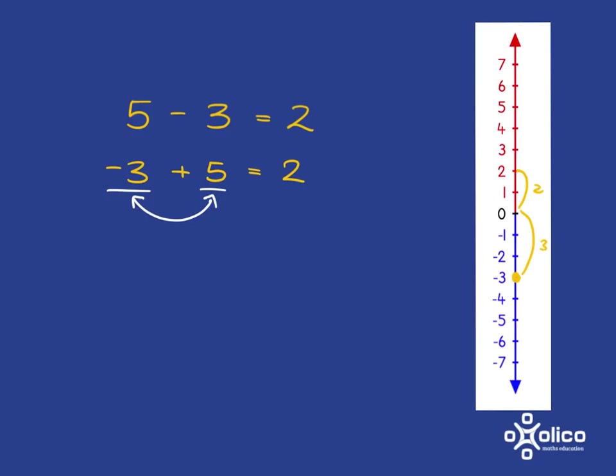So we can swap these things around and we're going to get exactly the same thing. So negative 3 plus 5 is exactly the same as 5 plus negative 3. Now, at the moment, you're just going to have to believe me that when we say 5 plus negative 3, it's exactly the same as saying 5 subtract 3. And so we get the answer of 2.